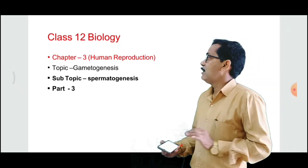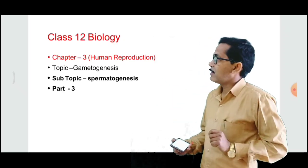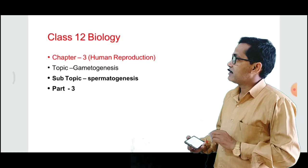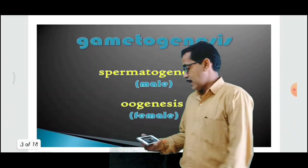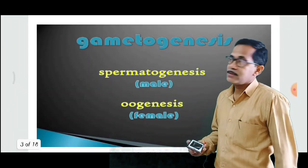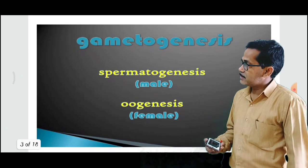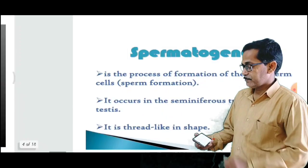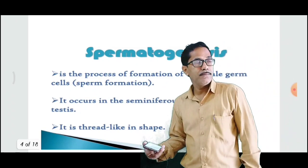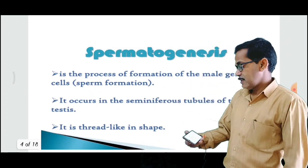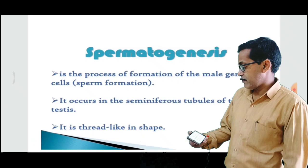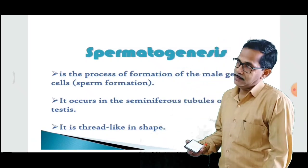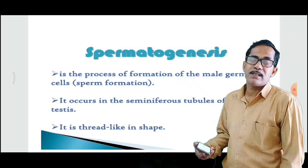Spermatogenesis means the formation of sperm inside the testes. The sperm in the male is formed by spermatogenesis, and in the female it is oogenesis. Spermatogenesis is the process of formation of male germ cells inside the gametangia, which means the testes.